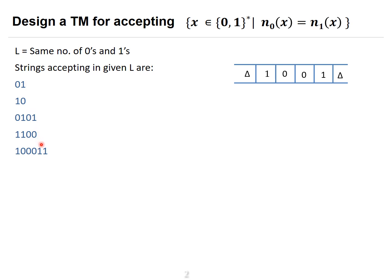What you observe in these strings is there are equal numbers of zeros and ones. The appearance of zeros and ones need not be the same - wherever they appear doesn't matter - but the given string should have equal number of zeros and equal number of ones. For example, a string that starts with one but still has equal number of zeros and ones is valid.